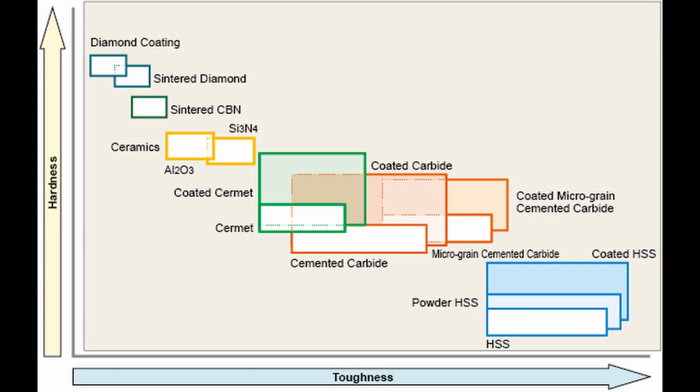Endmills come in different materials themselves, but most commonly high speed steel and carbide. High speed steel is cheap, but not able to cut as fast and efficiently as carbide tools.